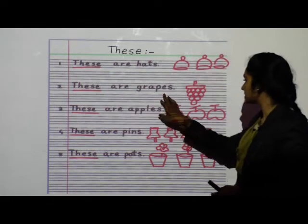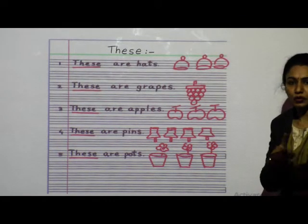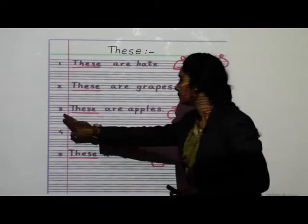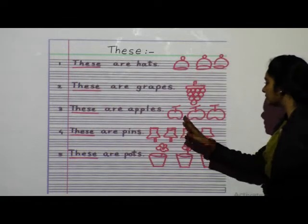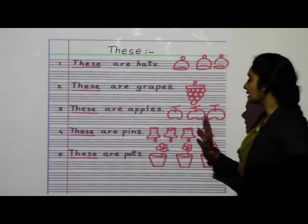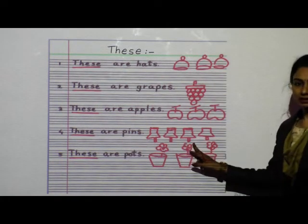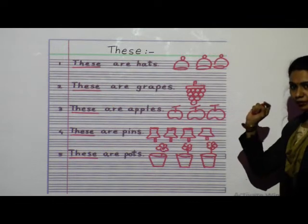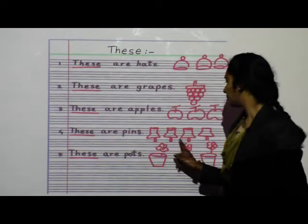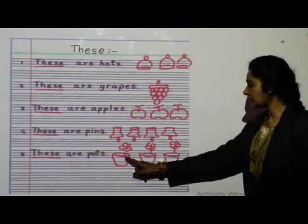Next: These are grapes. Many grapes are there, so these are grapes. Number three: These are apples. How many apples are there? Total three apples are there. So, these are apples. These are pins — push pins, which we use on the notice board to put up a notice. So, these are pins. These are pots.